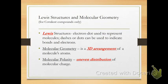So Lewis structures and molecular geometry — when we're talking about molecular geometry, we are talking about only covalent compounds. Why? Because they're sharing and they're bonds, and what do they form? Molecules, hence molecular structure and molecular shape, because it's molecules.